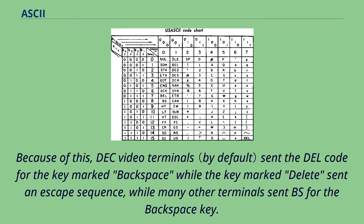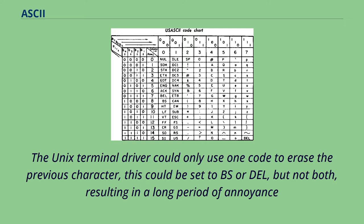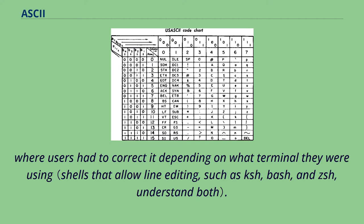Because of this, DEC video terminals sent the DEL code for the key marked backspace, while the key marked delete sent an escape sequence, while many other terminals sent BS for the backspace key. The Unix terminal driver could only use one code to erase the previous character; this could be set to BS or DEL, but not both, resulting in a long period of annoyance where users had to correct it depending on what terminal they were using.